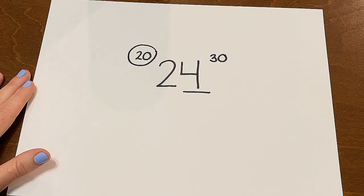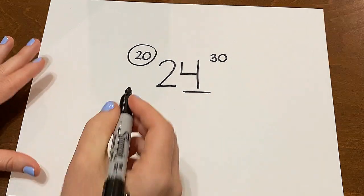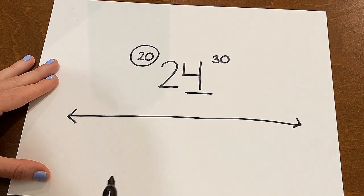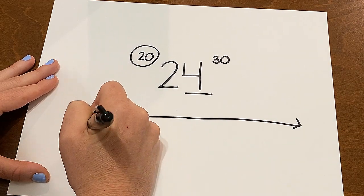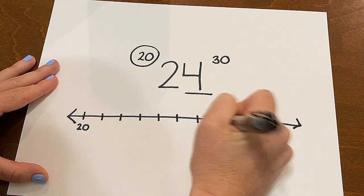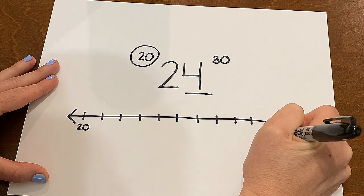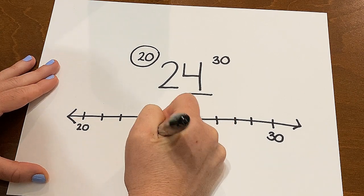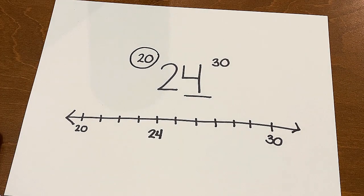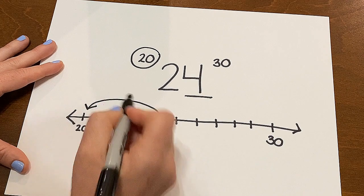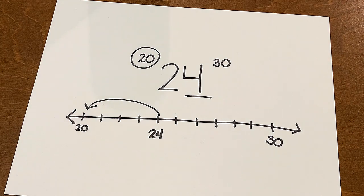I can also show this by using a number line. A number line shows all the numbers that are there. So I'm going to do 20, 21, 22, 23, 24, 25, 26, 27, 28, 29, 30. And I'm going to show 24 — 21, 22, 23, 24. Here is 24 on my number line. And I want to think: what is it closest to? On my number line, you can easily see that 24 is closer to 20. So 24 would round down to 20.